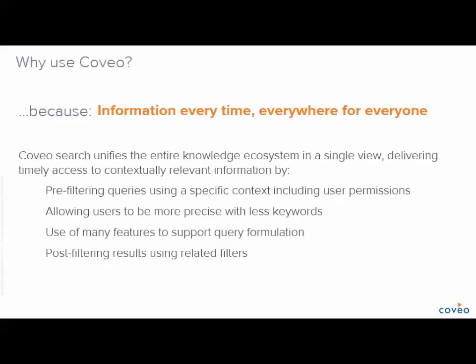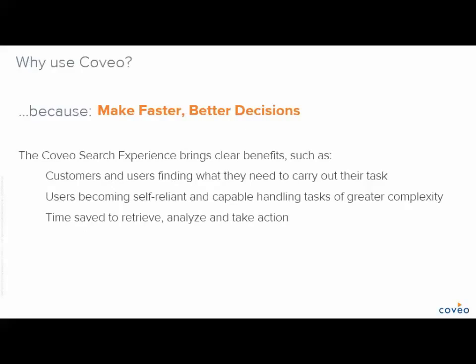That being said, why use Coveo? Because Coveo provides all required knowledge, timely and relevant, within the context of each and every person. It does this by pre-filtering queries using a specific context including user permissions, allowing users to be more precise with fewer keywords, use of many features to support query formulation, and post-filtering results using related filters. Coveo gives timely access to contextually relevant information, making knowledge actionable. The benefit is efficient decision making, customers and users finding what they need to carry out their tasks, users becoming self-reliant and capable of handling tasks of greater complexity, and time saved to retrieve, analyze, and take action.